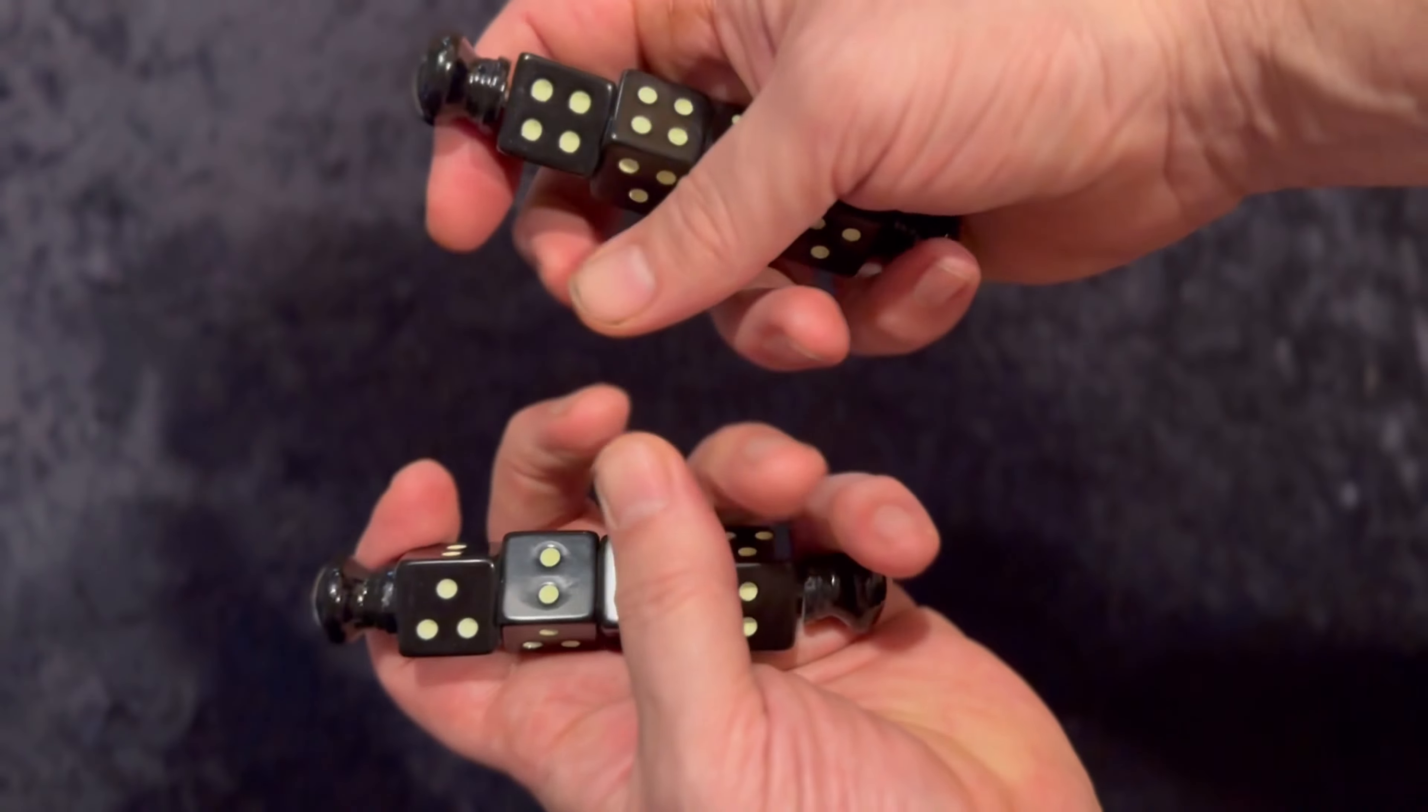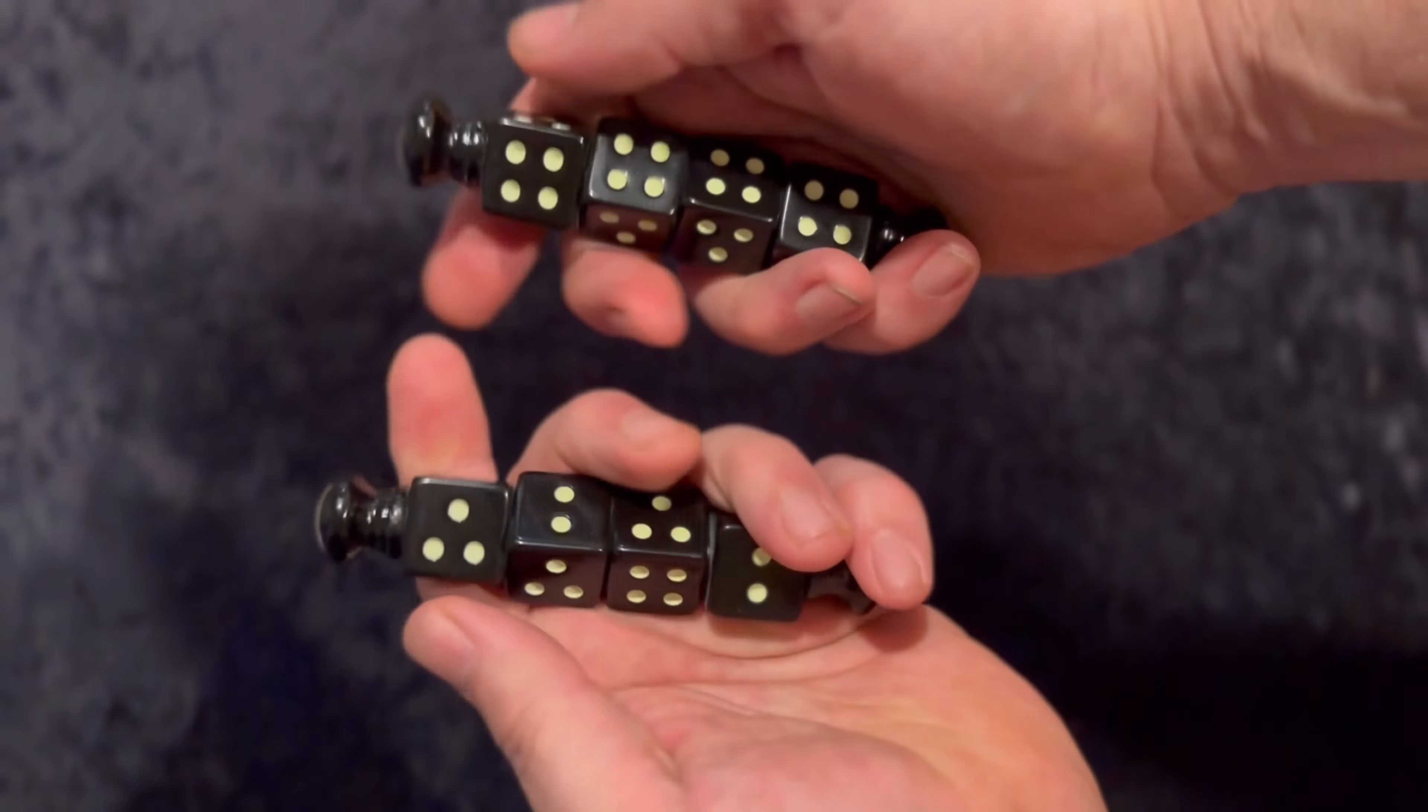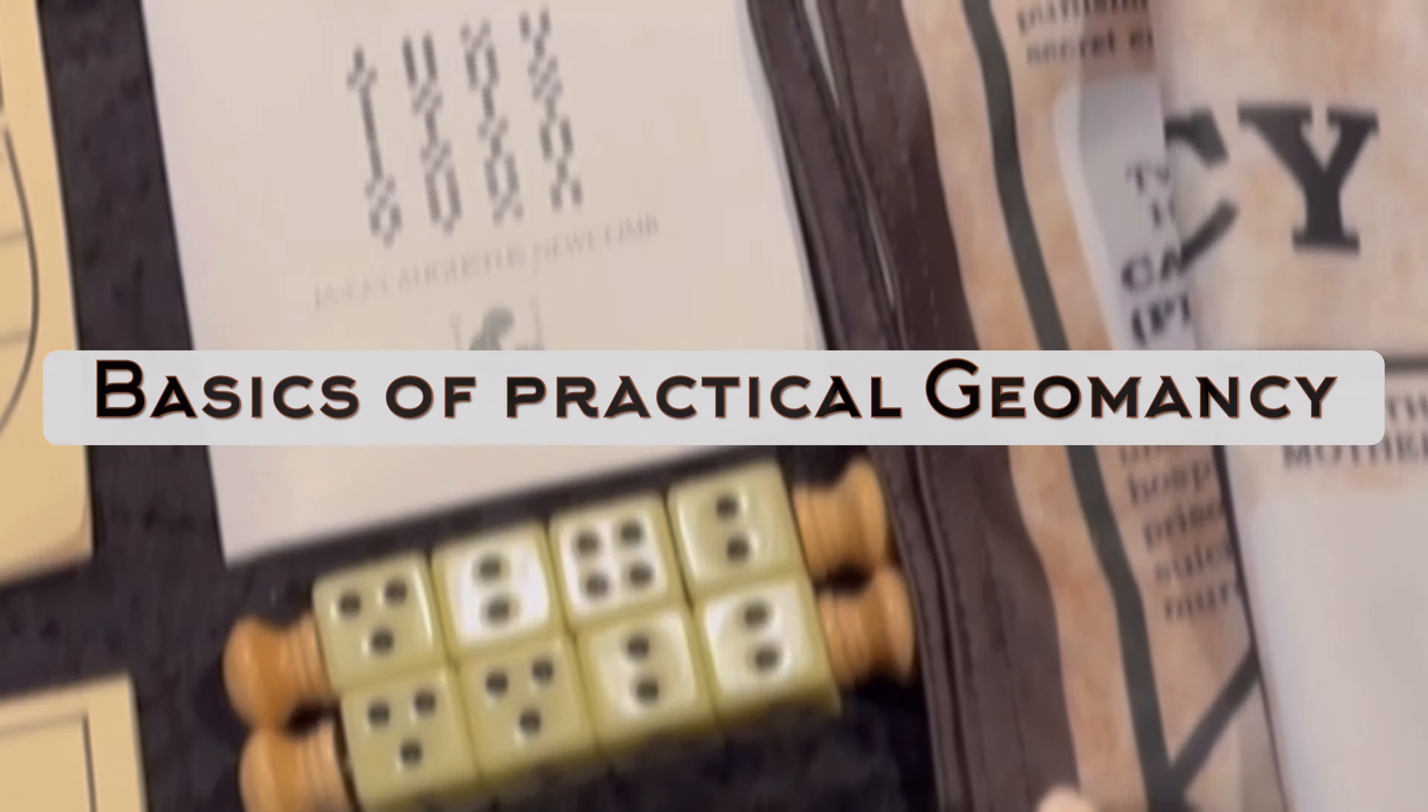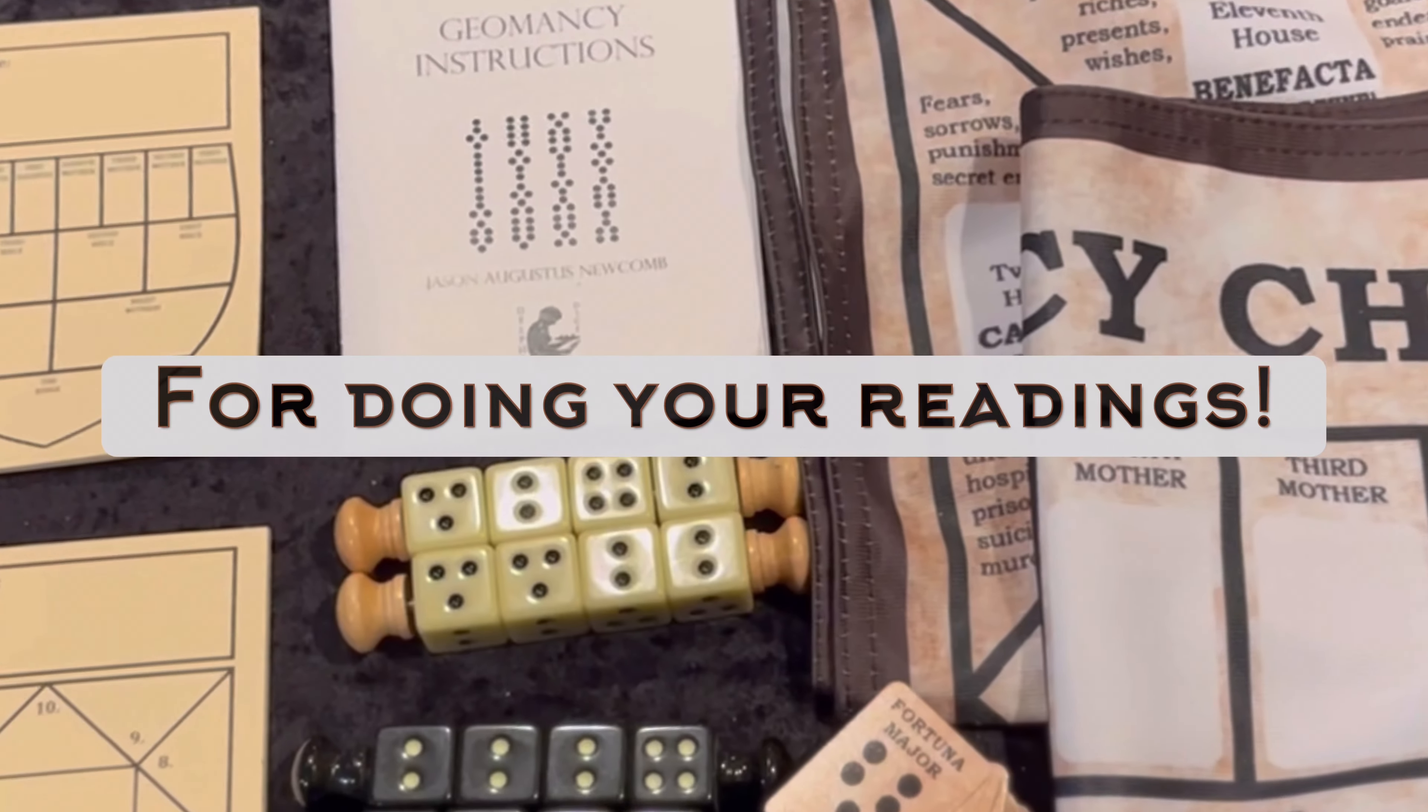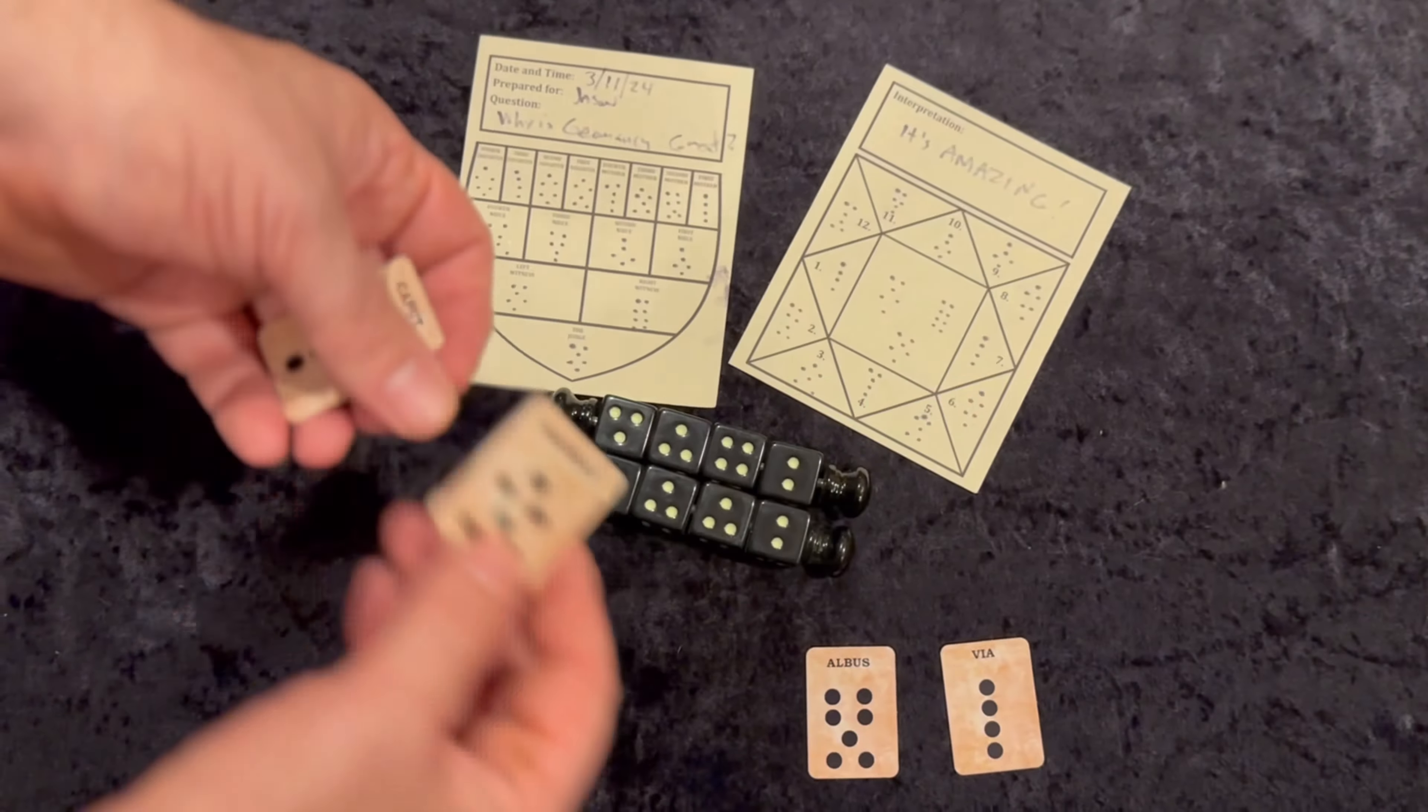These dice are available in black or bone coloring. In addition, you'll receive complete instructions in the basics of practical Geomancy as well as specially designed pads for doing your readings. All of this is available for just $30.